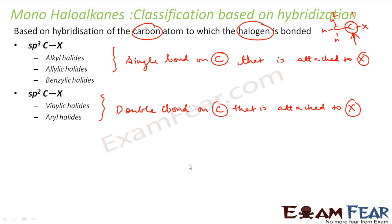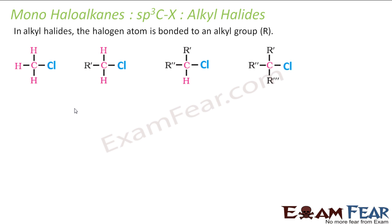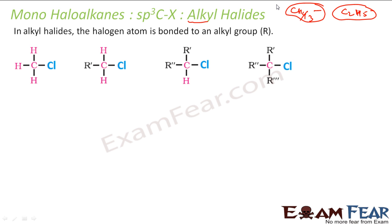For single bond (sp3) carbons, we have three varieties: alkyl, allylic, and benzylic. For double bond (sp2) carbons, we have vinylic and arylic. An alkyl halide, as the name suggests, contains an alkyl group attached to a halogen. For example, CH3 is a methyl group and Cl is the halogen — so CH3Cl is methyl chloride, an alkyl halide.